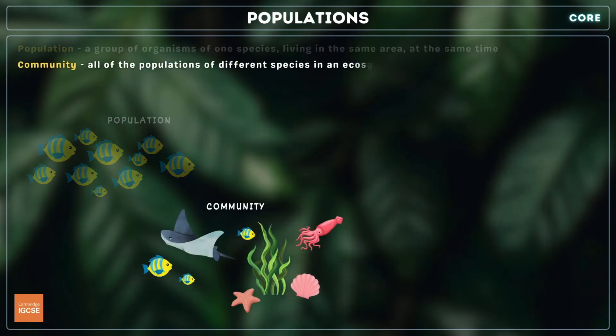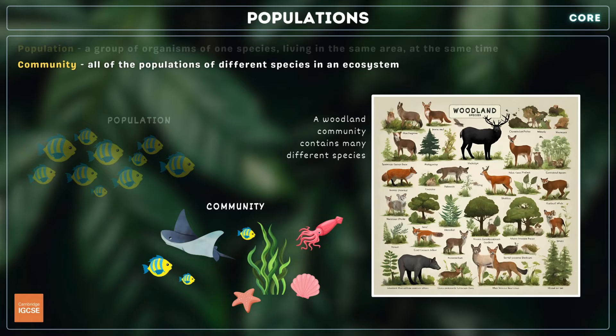A community is made up of all the populations of different species living in a given habitat or ecosystem. For example, a forest community might include populations of trees, birds, insects, mammals and flowering plants.